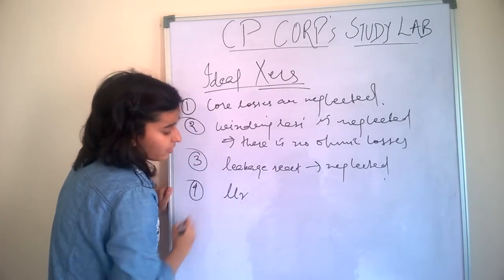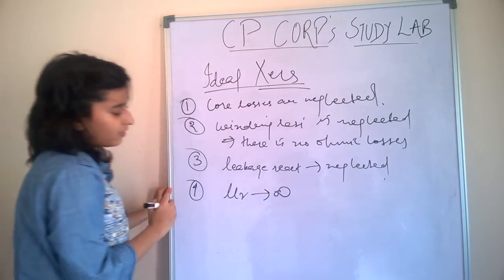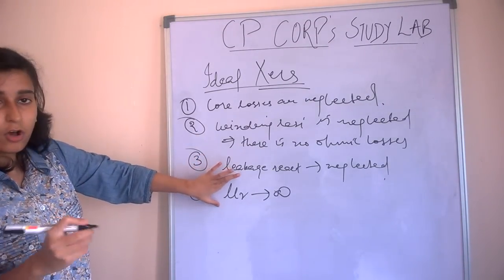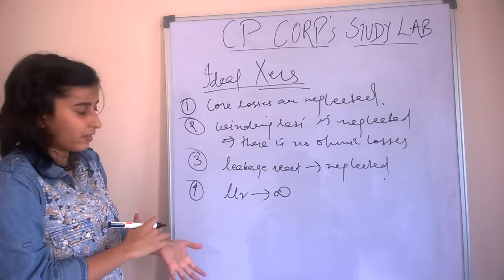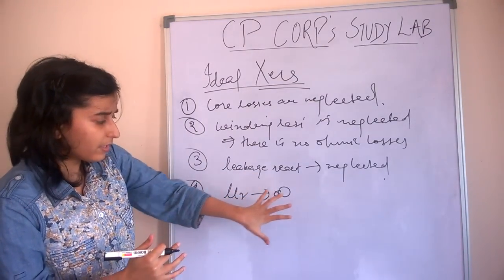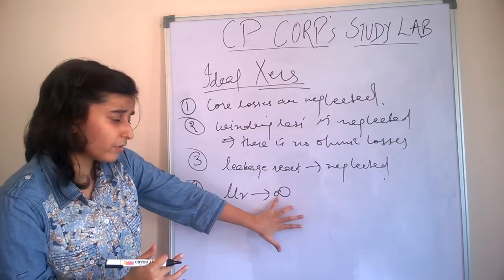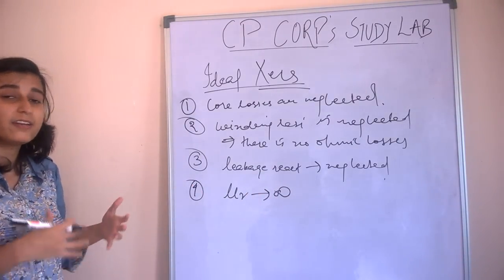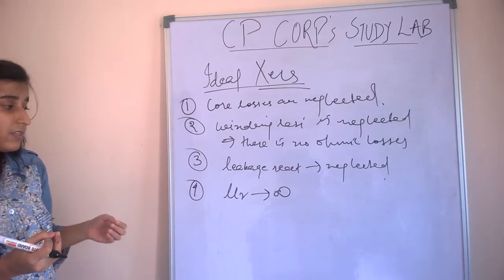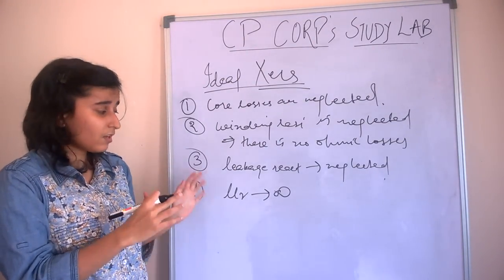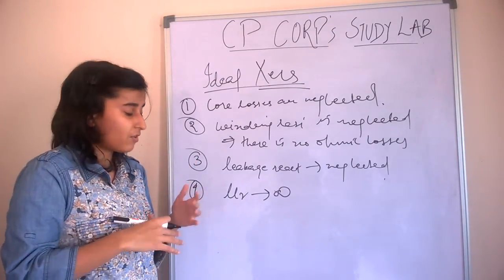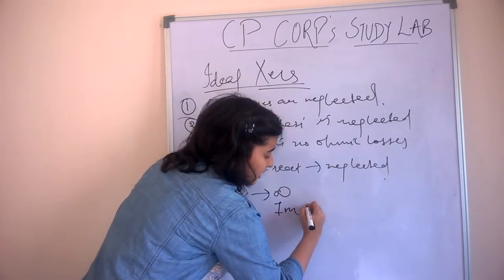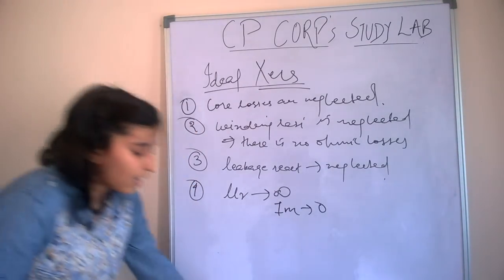And very important, mu_r magnetic permeability is assumed to be infinite. Magnetic permeability is a property of the core or any magnetic material that permits the flow of magnetic field. Magnetic permeability tending to infinity means the core does not need any magnetizing current to maintain the flux in the core. For zero magnetizing current, flux in the core is established. For an ideal transformer, magnetizing current is zero.